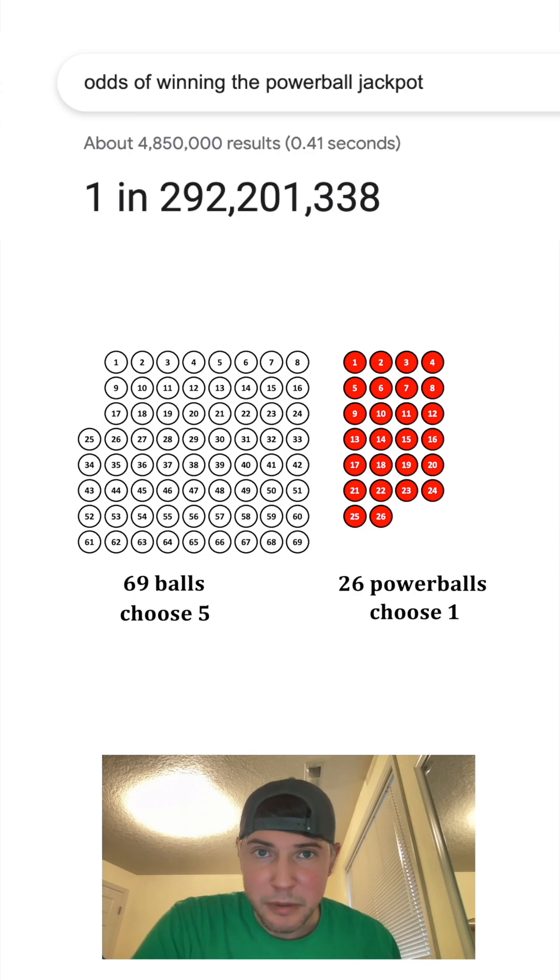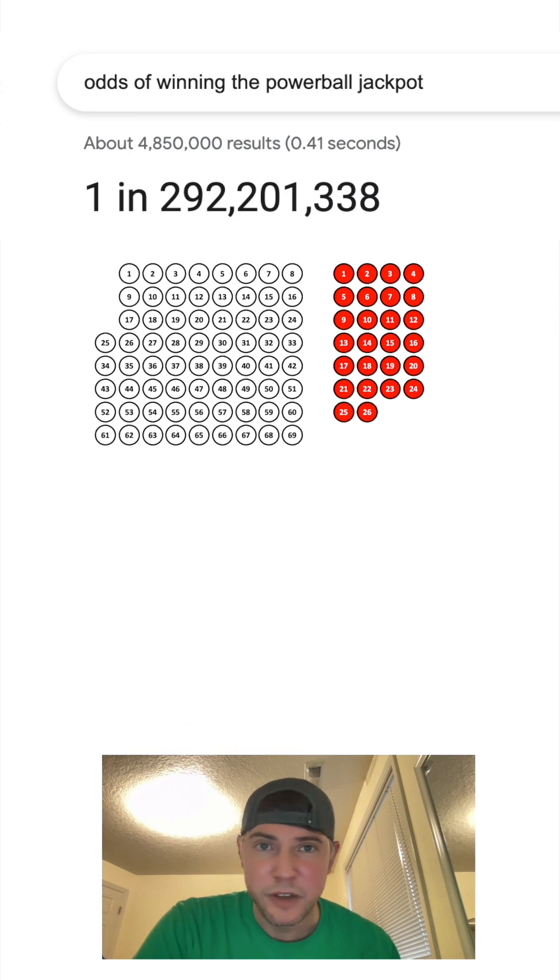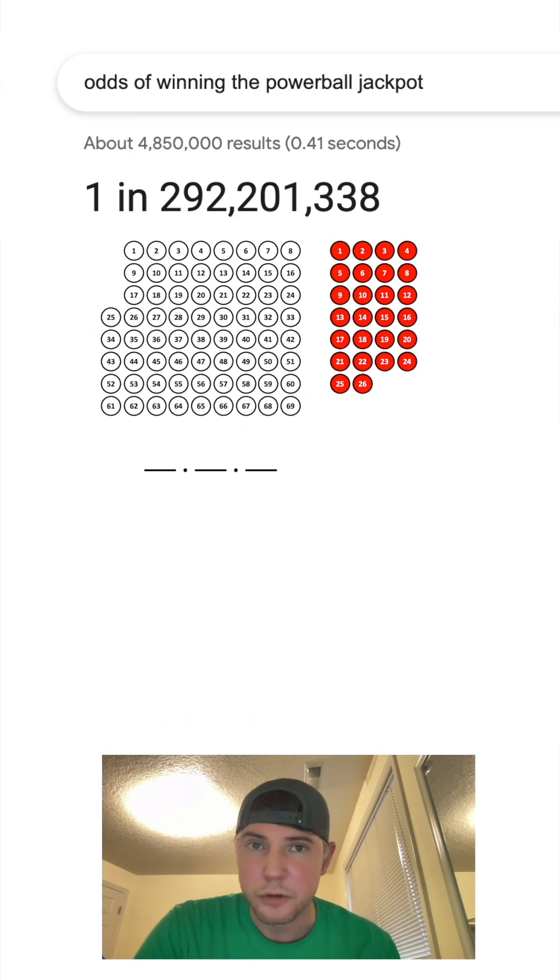And one of the best ways we can find the probability of this happening is treating the selection of each ball as its own event. So you have the first ball, the second ball, third ball, fourth ball, fifth ball, and then the selection of the Powerball.